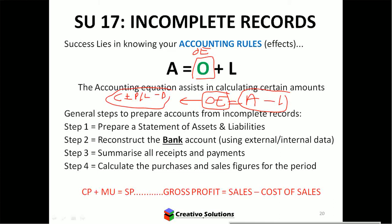It's possible to calculate anything if we've got an equation. When you do questions that have missing figures, look at the statement of assets and liabilities — the statement of financial position — which can help you work out a missing amount. Bank can also help, because you'll have a bank statement with internal and external records.